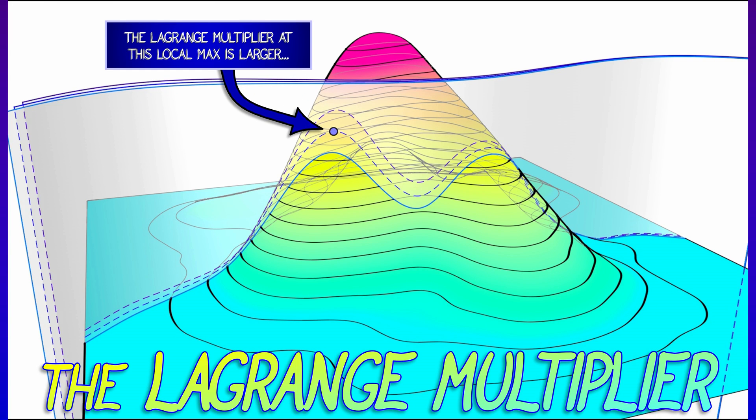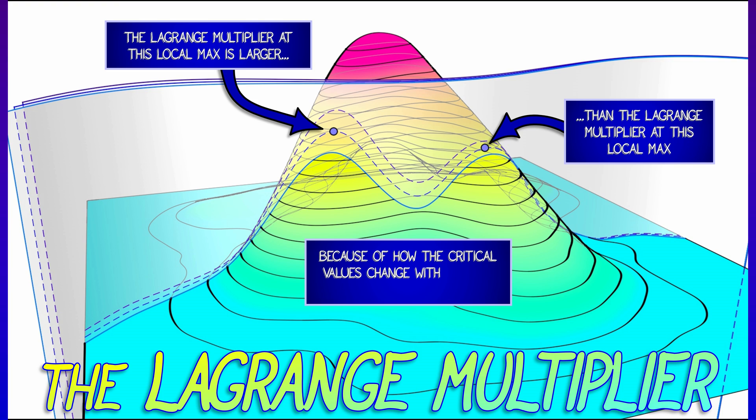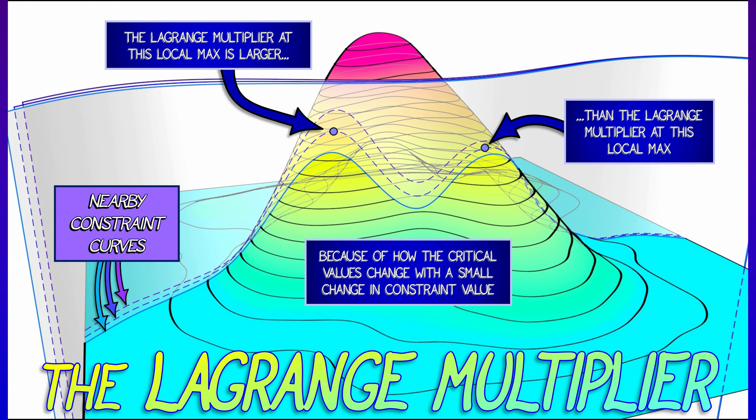And what this means visually is that if you look at the critical point on the left, that local maximum, and you look at the local maximum on the right, then the one on the left has a larger Lagrange multiplier. Lambda's bigger on the left than on the right, because when you change the constraint value a little bit, you wiggle it back and forth, then the value of the local maximum is changing a lot for the critical point on the left, for the critical point on the right, not as much.